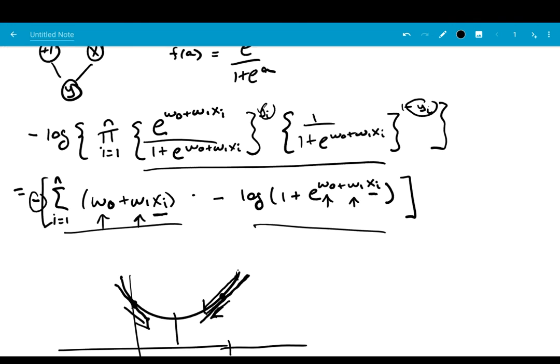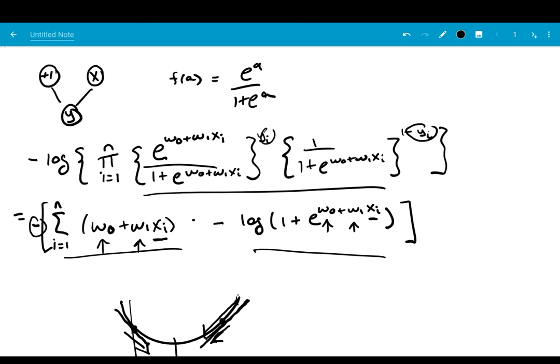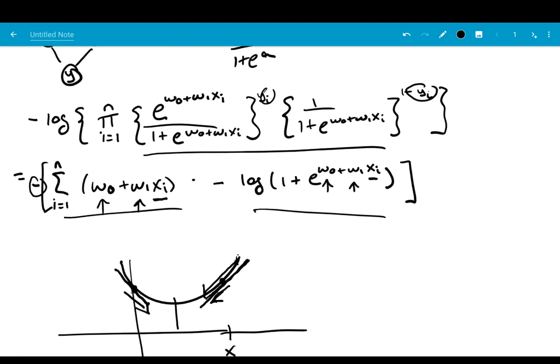I should say you wouldn't want to actually do logistic regression this way. Like I mentioned earlier, Python or every reasonable data science program is going to have an optimal logistic regression fitting program. So this is just for didactic purposes for explaining neural networks. So now let's try fitting some logistic regression models using PyTorch.